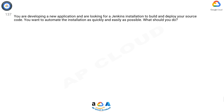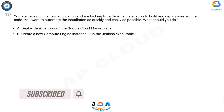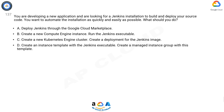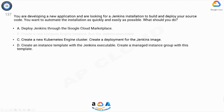Question 137: You are developing a new application and are looking for a Jenkins installation to build and deploy your source code. You want to automate the installation as quickly and easily as possible. What should you do? A) Deploy Jenkins through the Google Cloud Marketplace. B) Create a new Compute Engine instance and run the Jenkins executable. C) Create a new Kubernetes Engine cluster and create a deployment for the Jenkins image. D) Create an instance template with the Jenkins executable and create a managed instance group with this template.